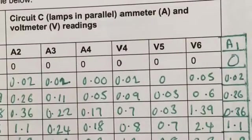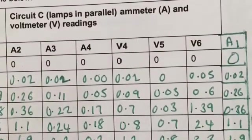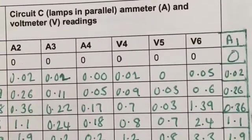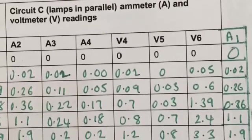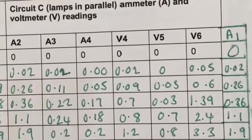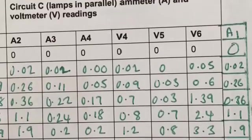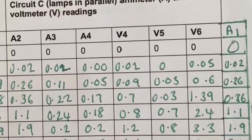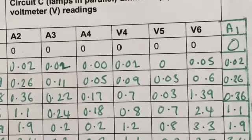So, A1 and A2 should be the same, the higher current value. A3 and A4 should also be the same, but a lower current value. And A3 plus A4 should equal A1 or A2.